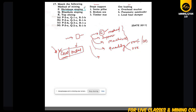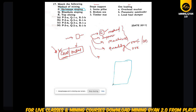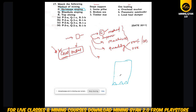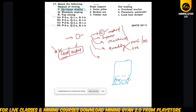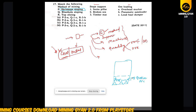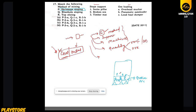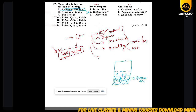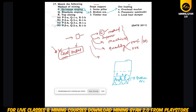In shrinkage stoping, if this is the stope, we create a sill support, divide into slices, and blast. The broken ore acts as a working platform — you stand on the broken ore, then start drilling and blasting again. In shrinkage stoping, the broken ore provides support and an overhand mucking system is used.